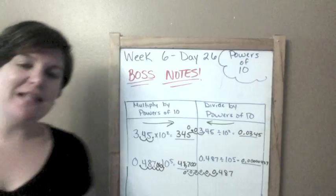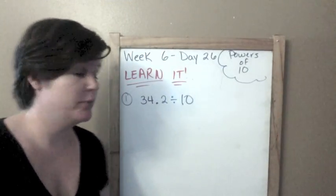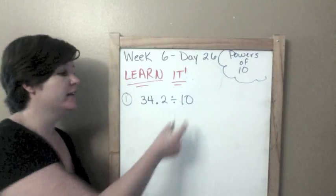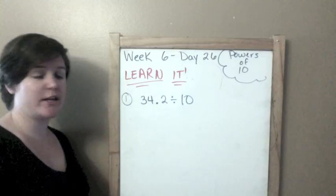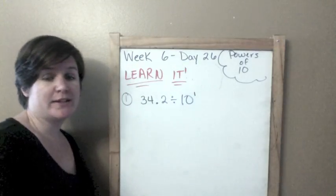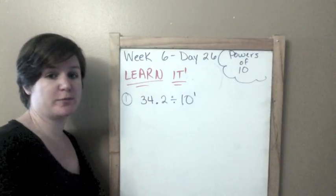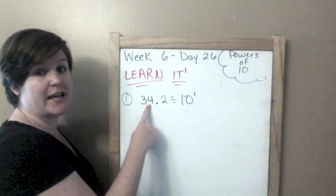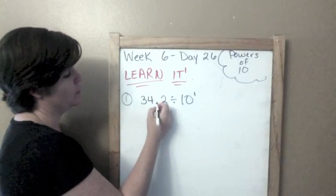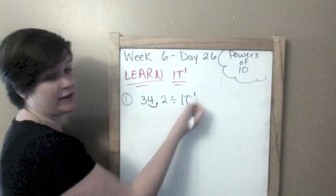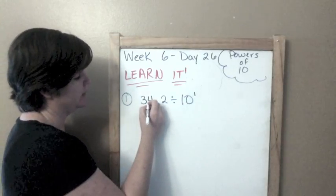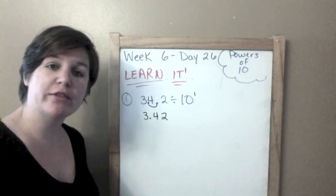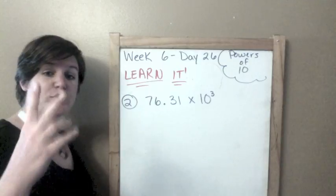I know it's tiny but that's how you do it. Learn it section everybody! We've got 34.2 divided by 10. There is not an exponent here but technically there is. 10 by itself is just like 10 to the first power. Because we are dividing, we're going to go to the left and make this number smaller. One place to the left, put our decimal and rewrite it: 3.42.